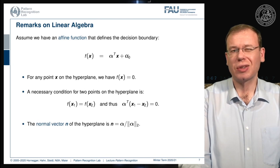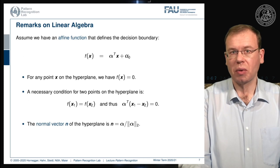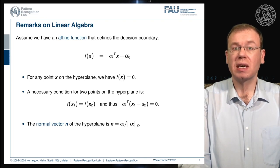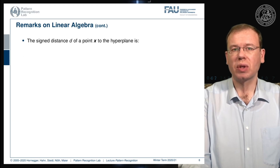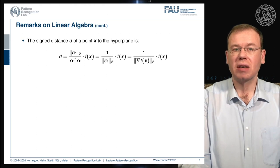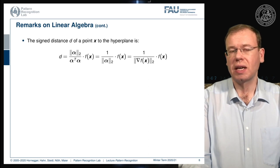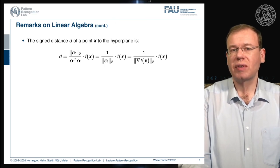Note that the actual normal vector of the hyperplane needs to be normalized by its length. Alpha points in the normal direction, but you divide by the length of alpha — the two-norm. This is very important when considering signed distances. To compute the signed distance d to the hyperplane, you scale by the normal vector: d equals f(x) divided by the norm of alpha. The gradient of f(x) is simply alpha, so you have a scaled version of f(x) with the magnitude of the gradient.